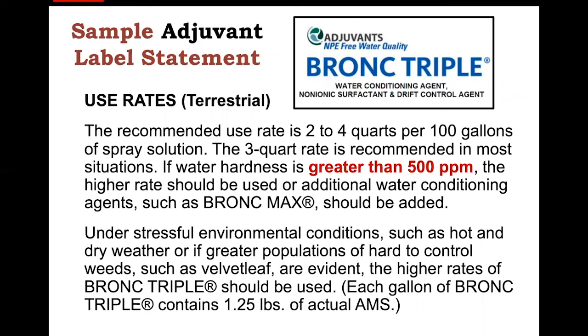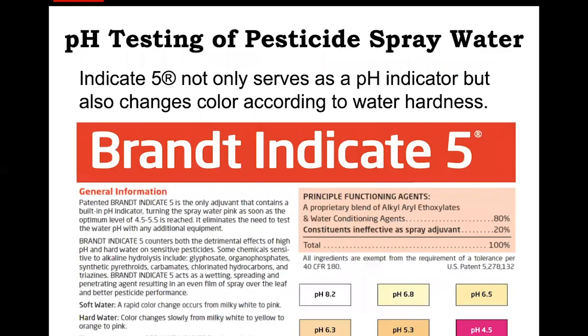A sample label from the BRONC Triple water conditioning agent suggests three quarts per 100 gallons of spray solution for most situations. However, extremely hard water and stressful environments may require additional water conditioning agents. As with water pH, additive products can also be used to measure water hardness. Brandt Indicate 5, discussed earlier for pH, also changes color according to water hardness and serves as a useful indicator for both water quality factors of pesticide spray water.